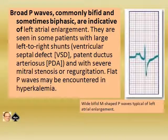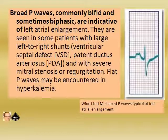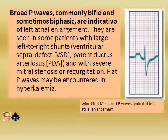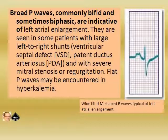Broad P waves, which are commonly bifid and sometimes biphasic, are indicative of left atrial enlargement. They are seen in some patients with large left-to-right shunt like ventricular septal defect, and with severe mitral stenosis or regurgitation. Flat P waves may be encountered in hyperkalemia. In the figure on your right side, wide bifid M-shaped P waves typical of left atrial enlargement are shown.